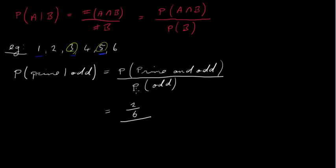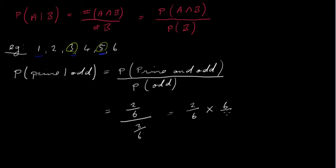What about the bottom — the probability of getting an odd number? We have one, two, three odd numbers, so that's three out of six. We have a fraction divided by a fraction, so flip the bottom and multiply: two over six multiplied by six over three. The sixes cancel, leaving two thirds. The probability of getting a prime number given that we have an odd number is two thirds.